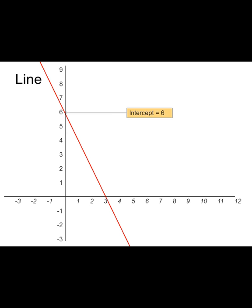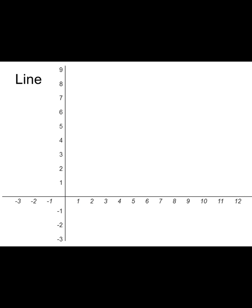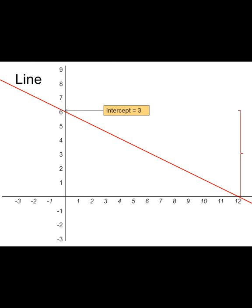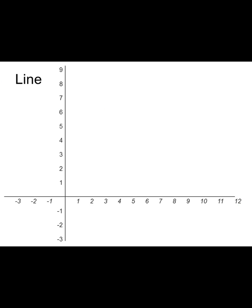Here's another example. The intercept is 6. Looking at where the line crosses the two axes, it went down by 6 going from left to right — a change in y of negative 6 — over a change in x of positive 3. Negative 6 divided by 3 equals negative 2. So ŷ equals 6 minus 2x. Another example has an intercept of 6 as well, with a change in y of negative 6, but the change in x is 12, giving a slope of negative 0.5. So predicted y equals 6 minus 0.5x.